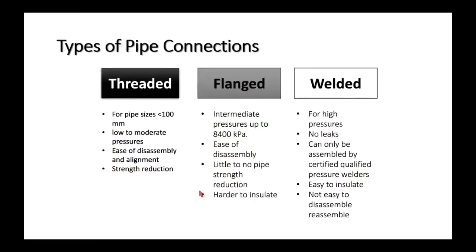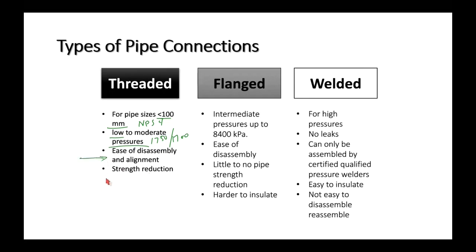Pipe connections: screwed connections are typically for NPS 4 and smaller, and for low to moderate pressures — below about 1700 kPa. The advantage is you can disassemble and reassemble without a welder. Because the pipe is threaded, you cut to a depth of H, so you must compensate for that strength reduction in your design.